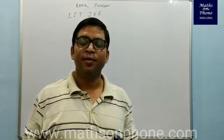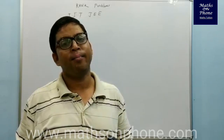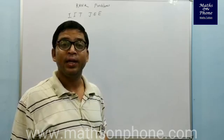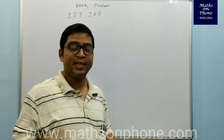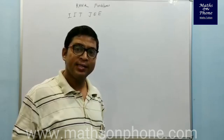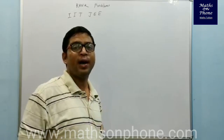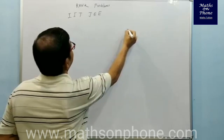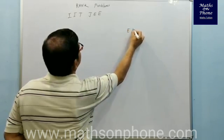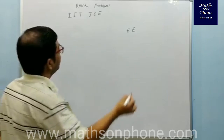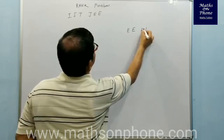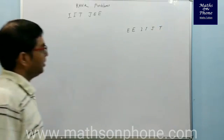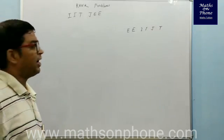The next question: different words are made with the letters of the word I, I, T, J, E, E. These words are arranged as in a dictionary. We will find the rank of the actual word I-I-T-J-E-E. Arrange the letters alphabetically: E, E, I, I, J, T. This is the alphabetical order and now we will start.